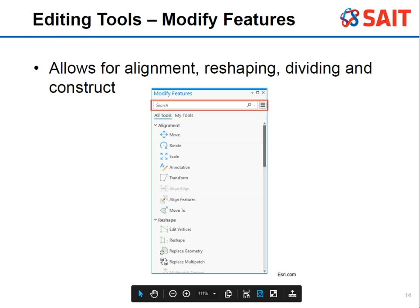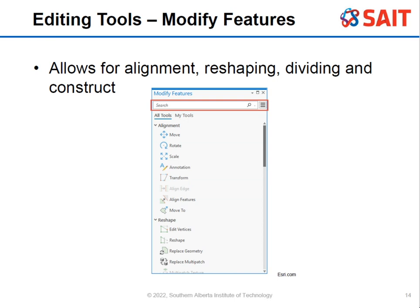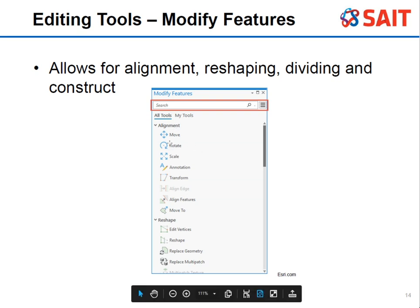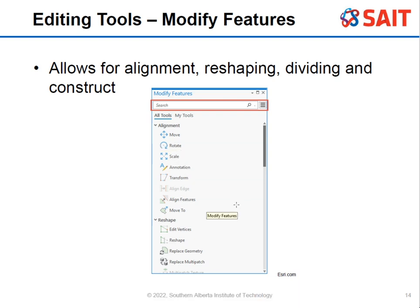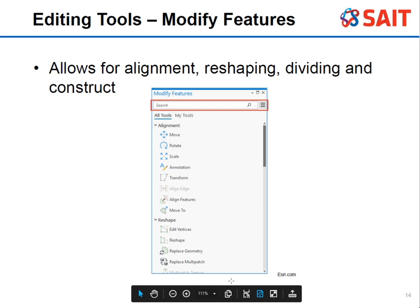There's also modify features. This allows for reshaping, dividing, constructing, and alignment. You can move things around, rotate, scale, shift, adjust a vertex, and change the geometry to look like what it's supposed to. There are a lot of different features here that are really helpful, and it's just a simple button click for them.